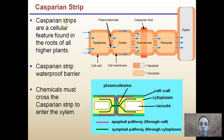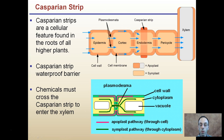Focusing more on the Casparian strip: it is a cellular feature found in the roots of all higher plants - a waterproof barrier. Chemicals must cross the Casparian strip to enter the xylem, which is why it acts as a filter. The symplastic pathway goes through the plasmodesmata, which are holes in the cell wall, while the apoplastic pathway travels through the cell walls rather than through the cytoplasm.